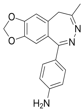GYKI-52466 is a 2,3-benzodiazepine that acts as an ionotropic glutamate receptor antagonist, specifically a non-competitive AMPA receptor antagonist. IC50 values are 10 to 20, approximately 450, and greater than 50 μM for AMPA, kainate, and NMDA-induced responses respectively. It is an orally active anticonvulsant and skeletal muscle relaxant. Unlike conventional 1,4-benzodiazepines, GYKI-52466 and related 2,3-benzodiazepines do not act on GABA-A receptors.